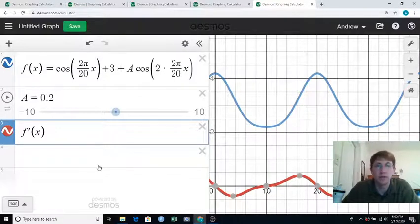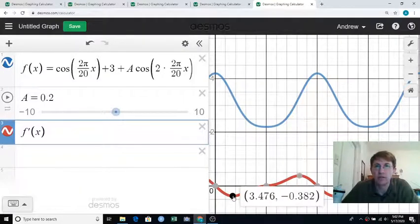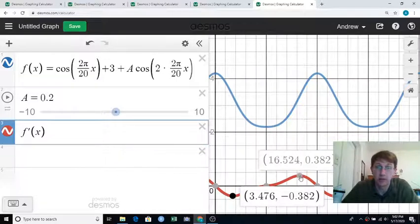So I can find the inflection points in Desmos by asking where are the points where f prime switches from decreasing to increasing, which is basically where it has mins or maxes, at least on this nice smooth graph.